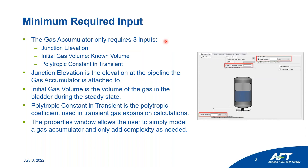Let's start by talking about the minimum inputs you need to model a gas accumulator in AFD Impulse 9. There are three required inputs: the junction elevation, the initial gas volume, and the polytropic constant in transient.